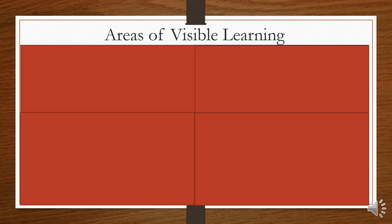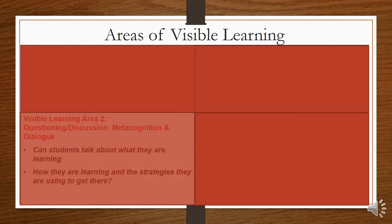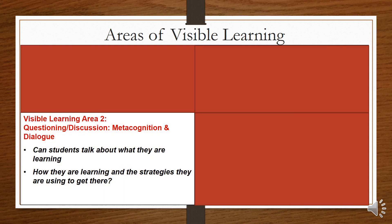In Medford, there are four main areas of visible learning that we are focusing on. The first is in the area of communication, which encompasses teacher clarity and success criteria — in other words, what do we want students to know and do, and what does it look like if they do it? The second is in the area of questioning and discussion and metacognition and dialogue. Can students talk about what they are learning, how they are learning, and the strategies they are using to get there?